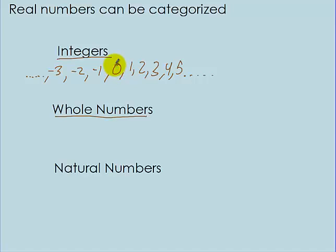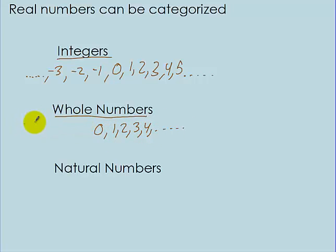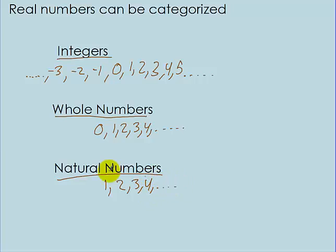Whole numbers are just a subsection of integers. Whole numbers include 0 and everything above that — 0, 1, 2, 3, 4, and keep going up. There are no negative numbers. Natural numbers are a subsection of whole numbers — it's all the whole numbers except for 0. So you start at 1, 2, 3, 4, and you keep counting up.